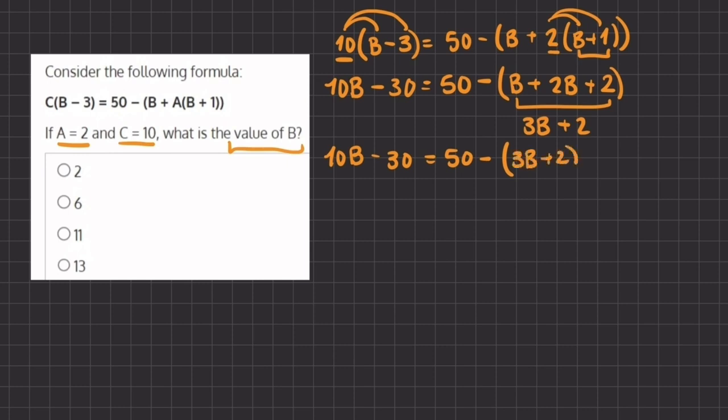we have 3b plus 2. Now, we can distribute this negative into our parentheses, and if we rewrite it, we have 10b minus 30 equals 50, minus 3b, minus 2.